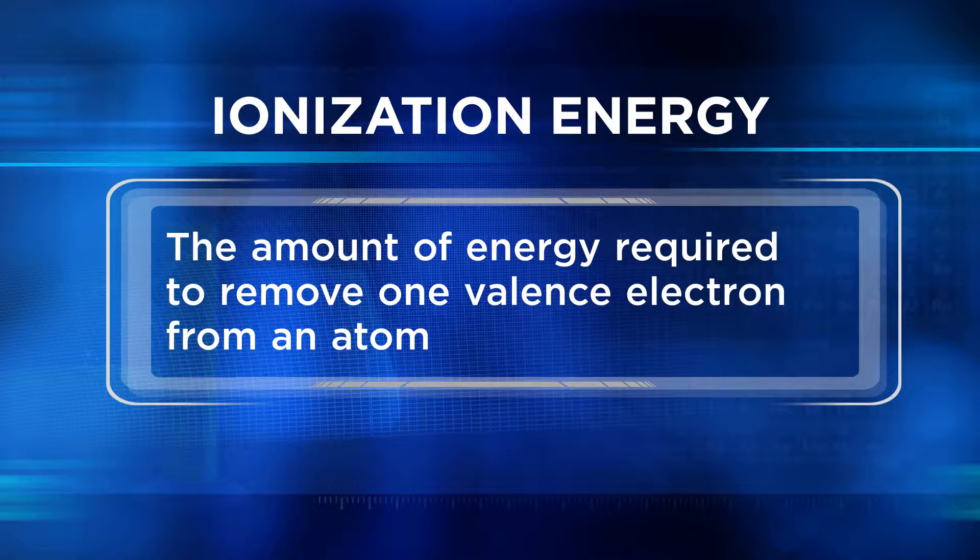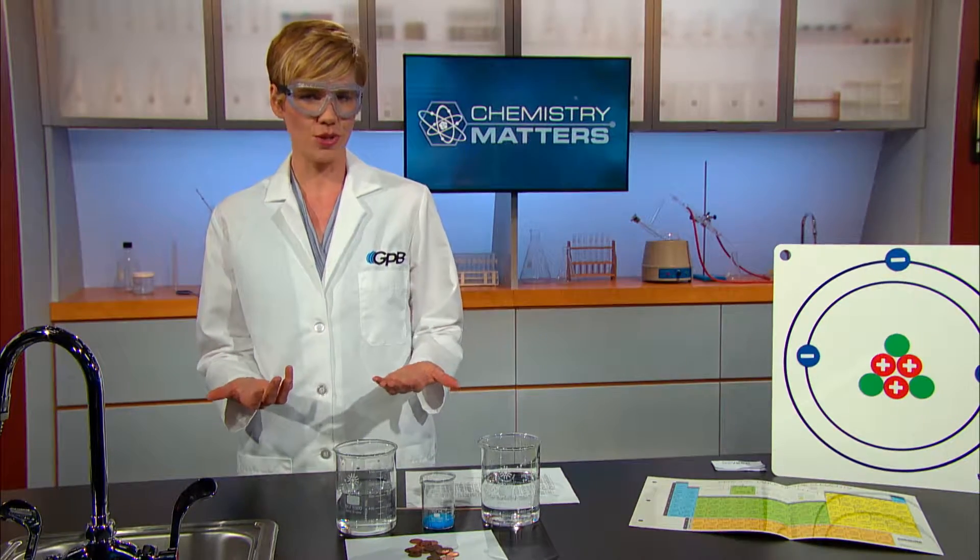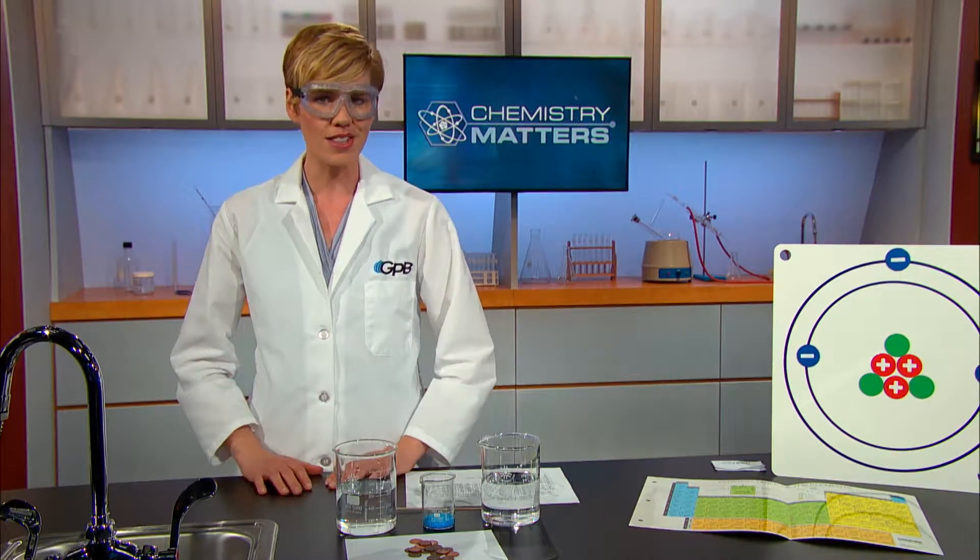I hope you remember that ionization energy is the amount of energy required to remove one valence electron from an atom. Electrons are little tiny particles of matter. So does removing one or two electrons really matter in the grand scheme of things?